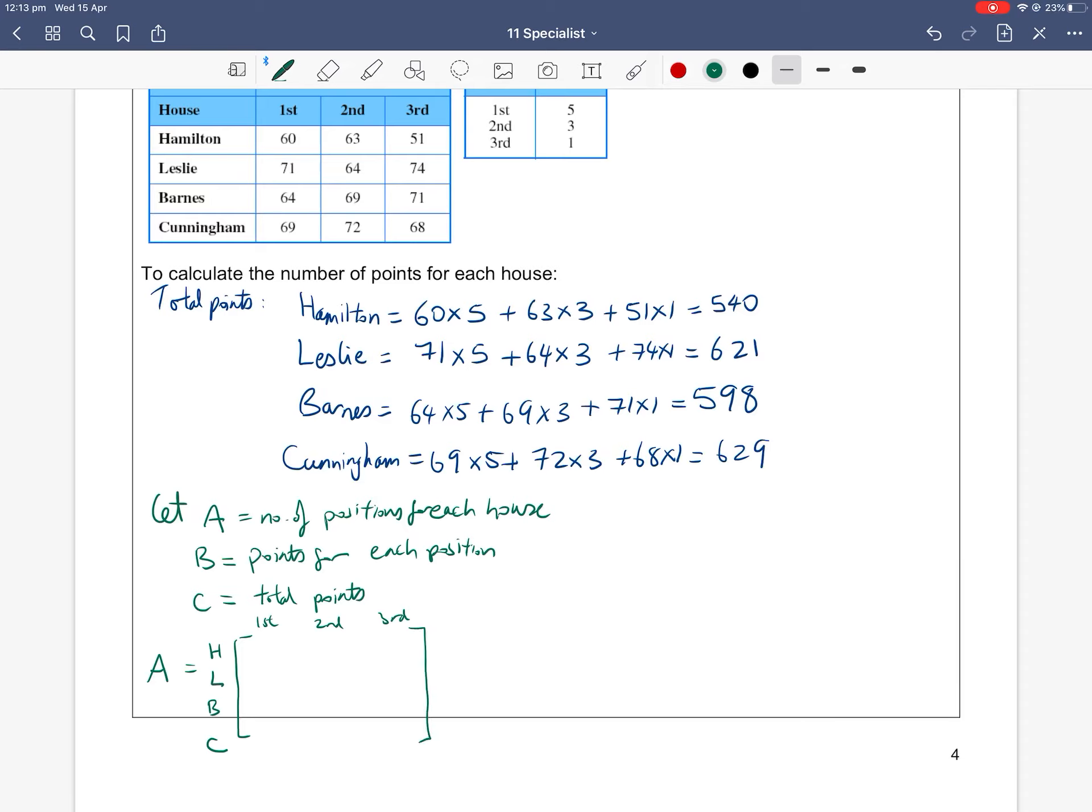I can convert this starting table into a four by three matrix. So my elements would be 60, 63, 51, 71, 64, 74, 64, 69, 71, 69, 72, 68. So I literally have not changed anything except turned the table information into a matrix form. I essentially just erased the lines in between all the numbers. That's all I did. Because that's the information for the number of positions gained for each house.